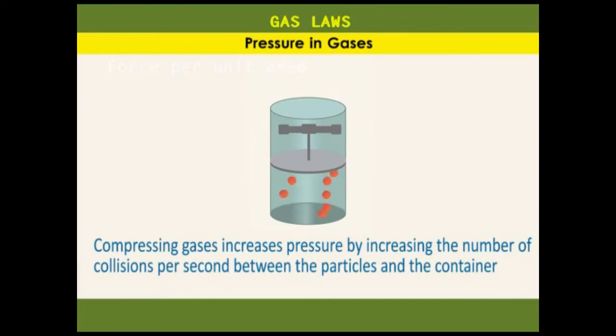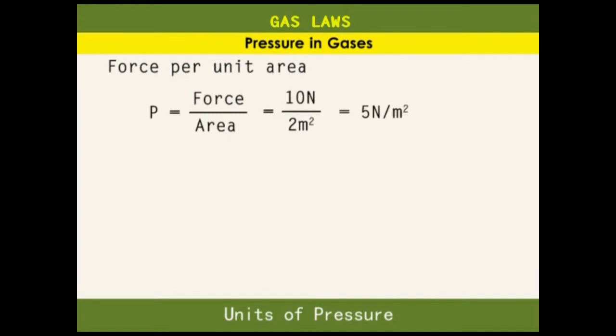From our calculation we give the unit of pressure as newtons per meter squared, derived from the units of force or weight and area. Newtons per meter squared is also called pascal. So one newton per meter squared is equal to one pascal.